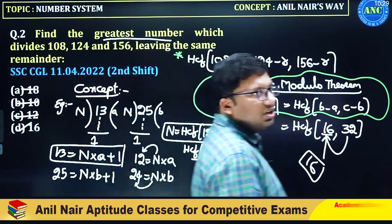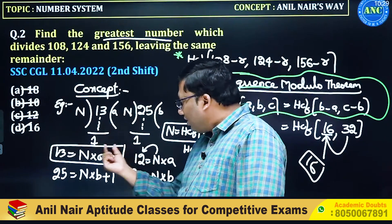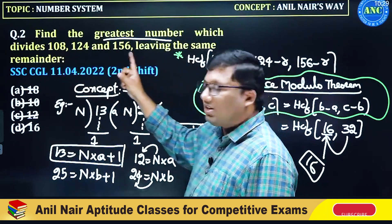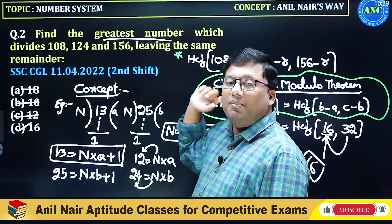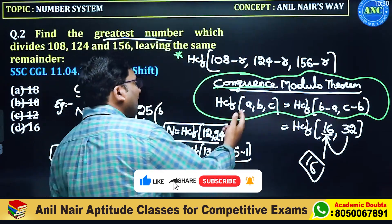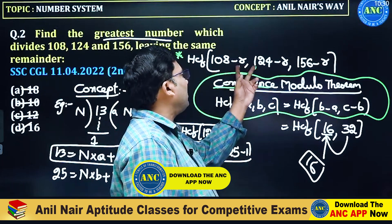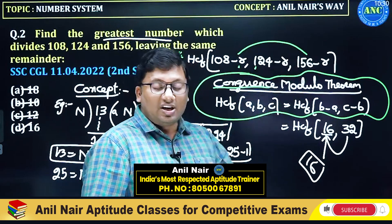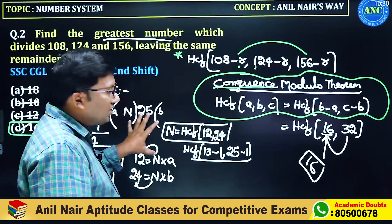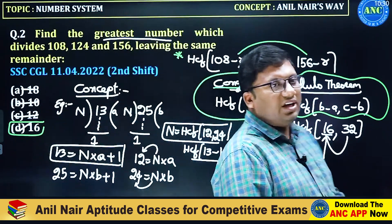Only two things you should know here: why we got 108 minus 8 — a number N divides and the remainder is 8, that means N is a factor of 108 minus 8, 124 minus r, and 156 minus r. The HCF of any three numbers will be a factor of their difference, B minus A and C minus B. If I take the differences 16 and 48, is 48 divisible by 16? Yes. So the answer is 16. This is the concept and the method used to solve the problem. Instead of directly solving the question, I gave you the entire background.